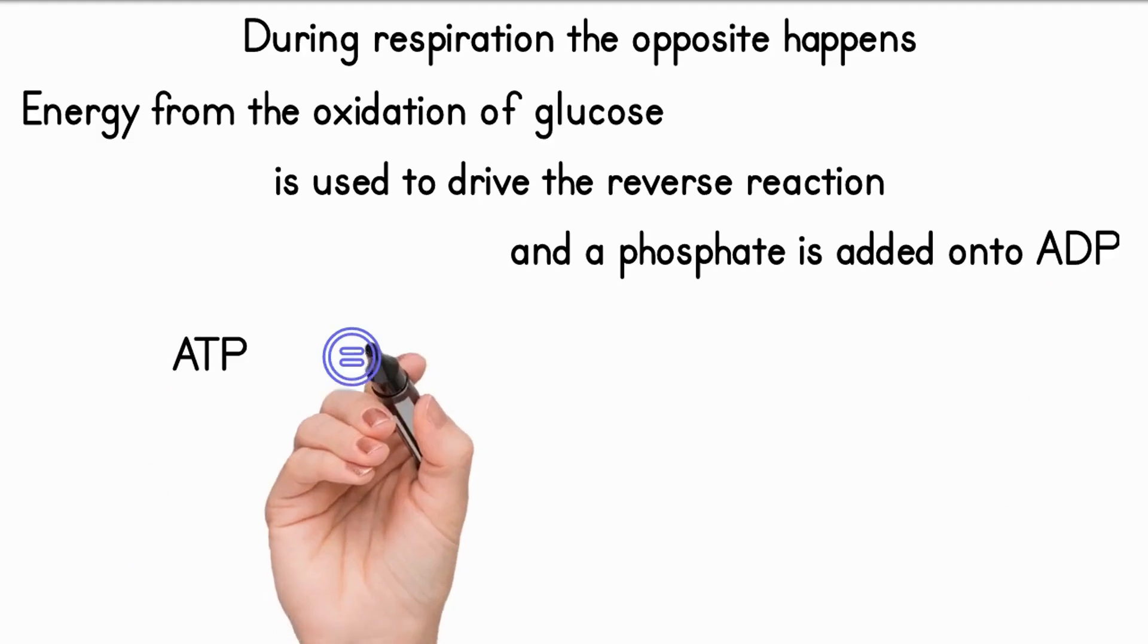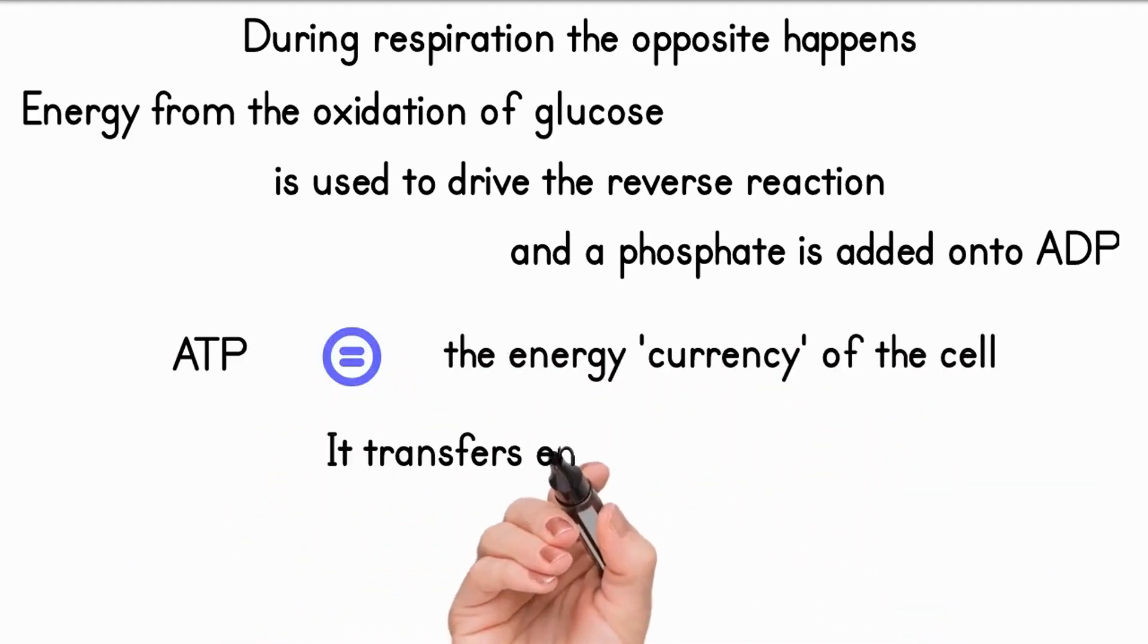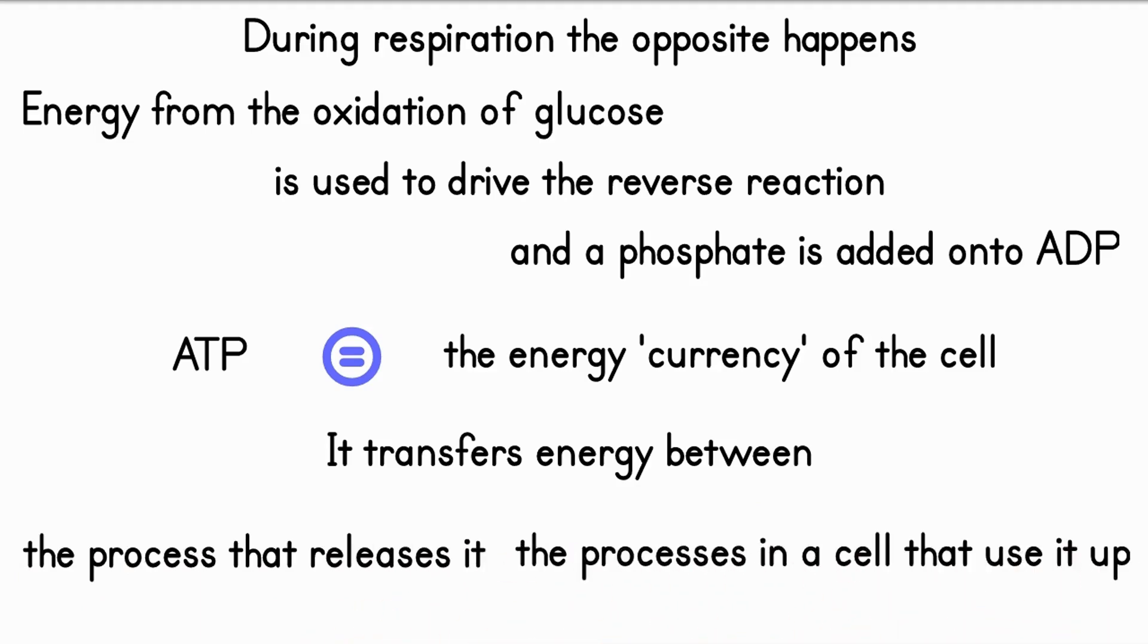ATP is often described as the energy currency of the cell. It transfers energy between the process that releases it, respiration, and the processes in a cell that use it up.